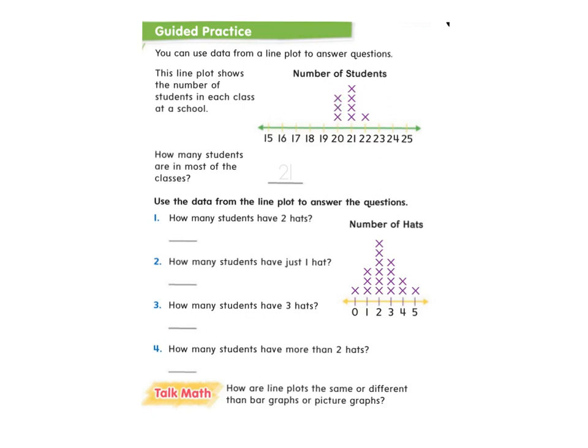How many students are in most of the classes? We're looking at the most frequent data, which is right here: 21. This is the number that has the most X's, which means it's the most frequent, it's the most popular. So 21 students is the most common number of students for each class.